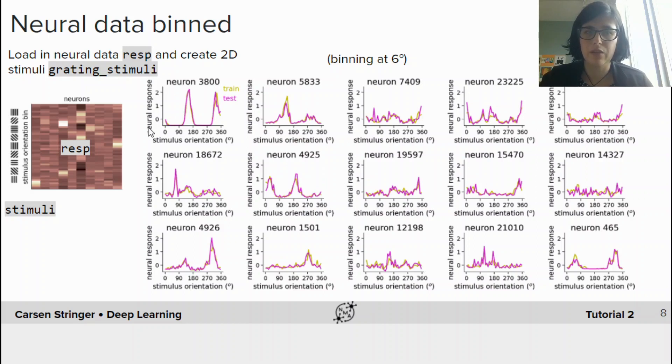So you can see in these neural responses that the neurons have a few peaks, maybe one or two or three, and let's see if our convolutional layer can help model these kind of diverse tuning curves that we see.